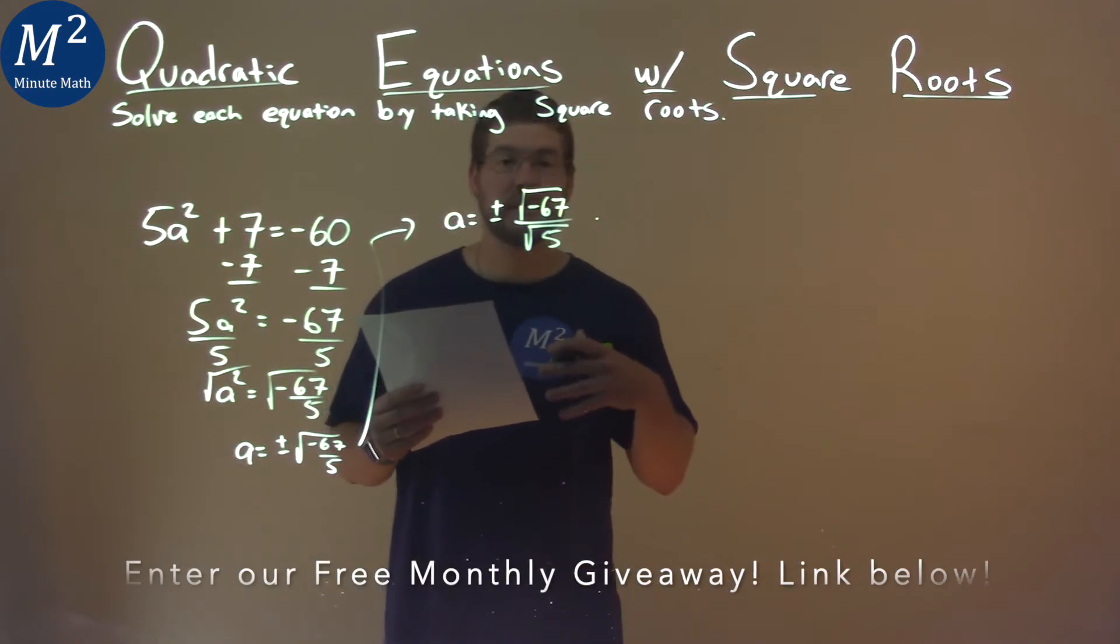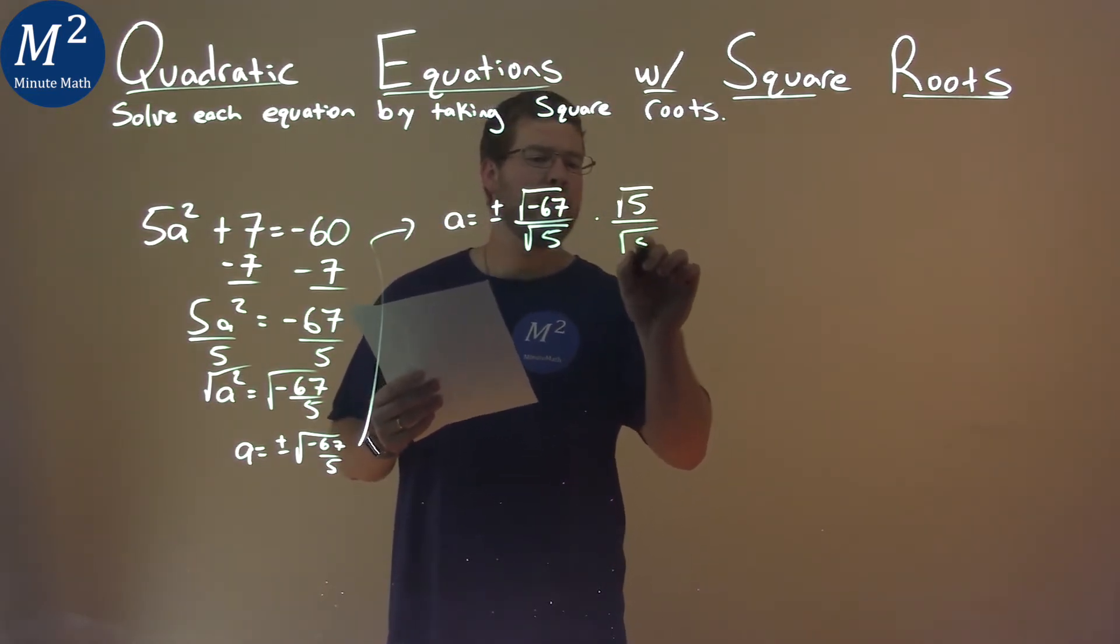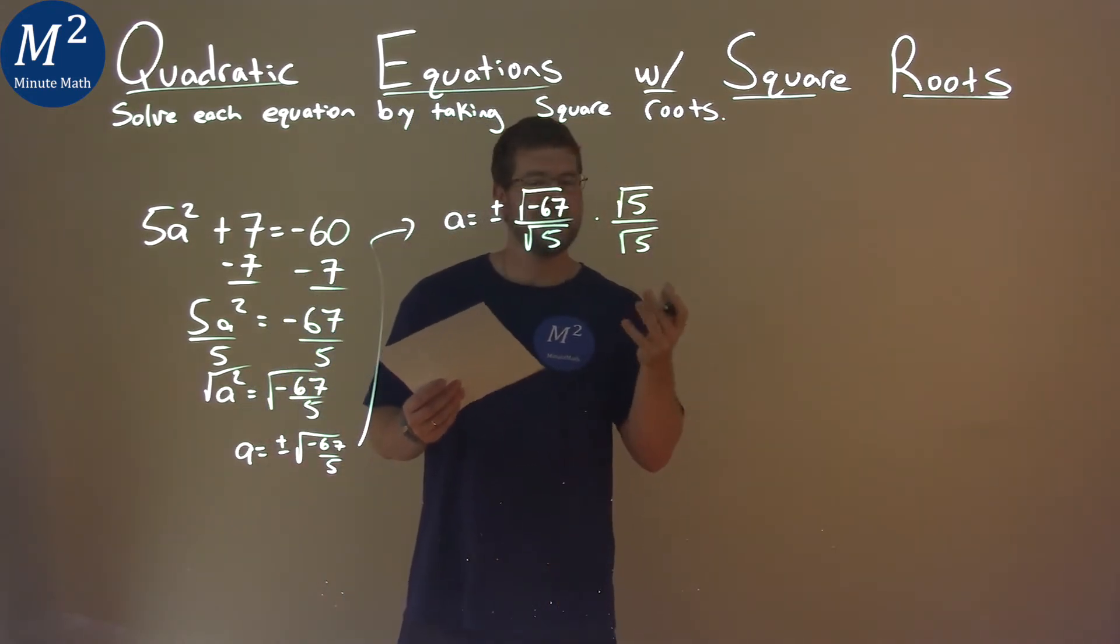I'm going to multiply this by essentially the number 1. But I'm going to make 1 be square root of 5 over 5, right? Square root of 5 over 5 is really 1, doesn't change it.